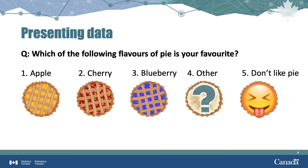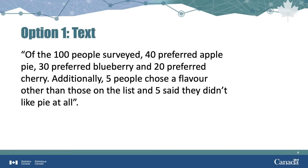Once you've acquired your data, there are several ways to communicate the results. The first option is text. You could consider creating a written report describing the figures that reads something like: of the 100 people surveyed, 40 preferred apple pie, 30 preferred blueberry, and 20 preferred cherry. Additionally, 5 people chose a flavor other than those in the list, and 5 said they didn't like pie at all.